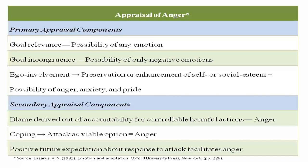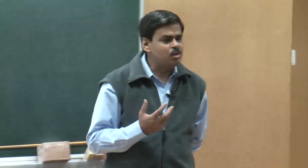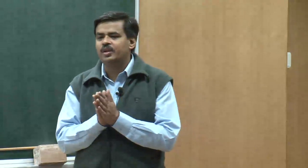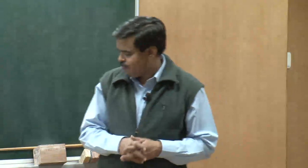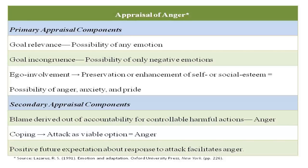For the appraisal of anger, the primary appraisal criteria will always address goal relevance, goal congruence, and ego involvement. If there is goal relevance, any emotion including anger is possible. If there is goal incongruence, only negative emotions are possible. If the ego involvement engaged is to preserve or enhance self or social esteem, then the possible emotions include anger, anxiety, and pride.